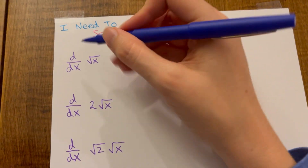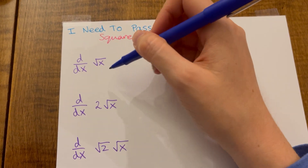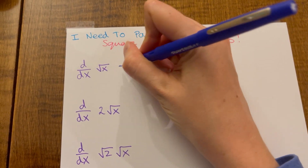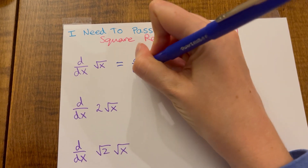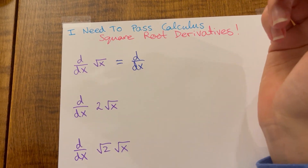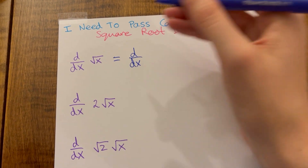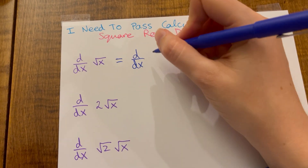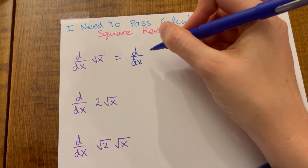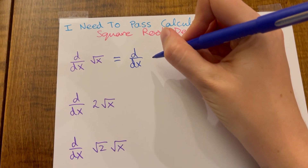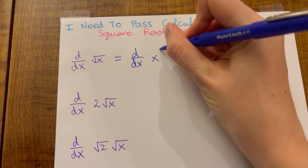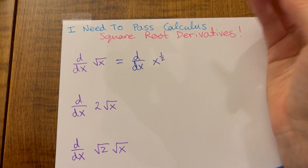So how do you take — just as a warm-up — how do you take the derivative of just the square root of x? I always like to rewrite derivative problems in a derivative-friendly form. The way you're supposed to do this is using the power rule, so we need to rewrite the square root of x as a power of x, which is exactly the same thing as x to the one-half.